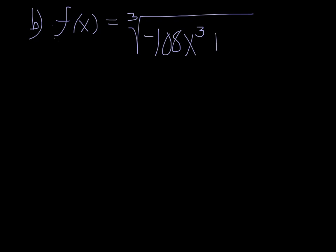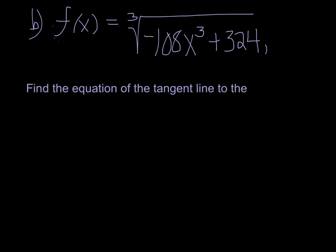Alright, we have another example. It gets a little more complex because this time, so this is example b, they're giving us a function. And the function is the cube root of negative 108x cubed plus 324. And what they're asking us to do is to find the equation of the tangent line to the graph of the function at x equals 1.